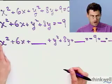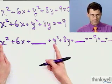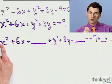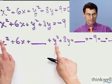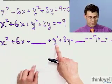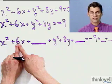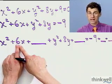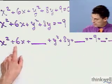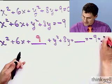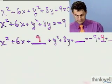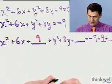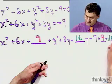First, make sure the coefficient on the squared terms is 1. If there were a 2 in front, you'd divide everything by 2. Happily, here we already have 1 x squared and 1 y squared. Then I look at the coefficient on the x term, which is 6. I take half of it — that's 3 — and square it to get 9. I add 9 here. Then for the y term, the coefficient is 8. Half of 8 is 4, and 4 squared is 16. So I add 16 to both sides.